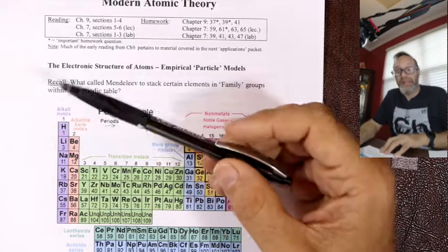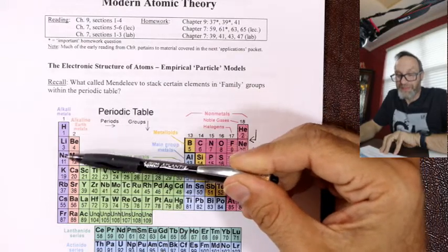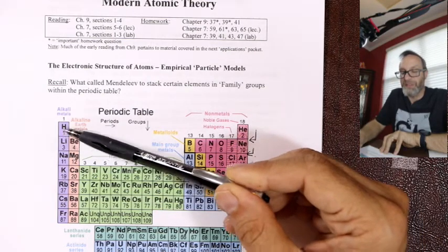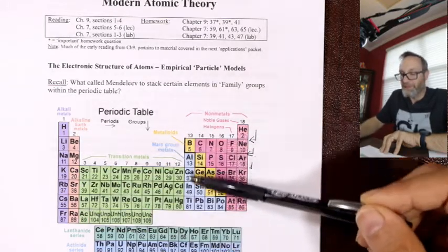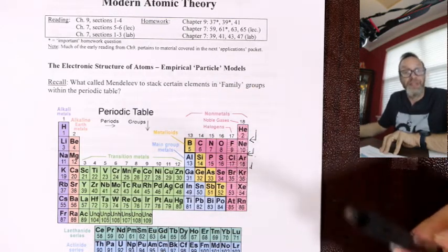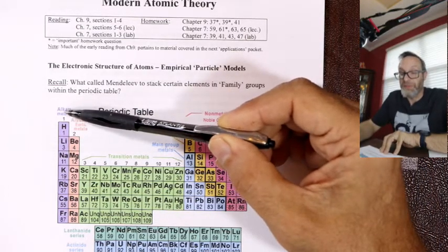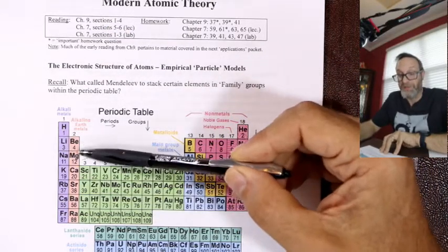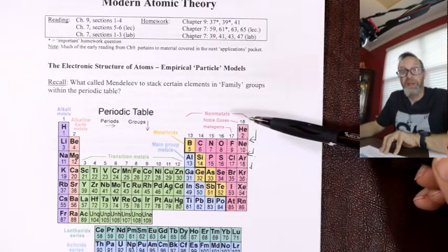Why do you hit return? Because things in the same column were placed there by hitting return in just the right spot. Lithium falls under hydrogen because they have similar chemistry. When you hit return in the right spot, things fall into similar columns with the same kind of chemistry — that's called a group. Group one are called the alkali metals; they have similar chemistry. Noble gases — their commonality is no chemistry at all.